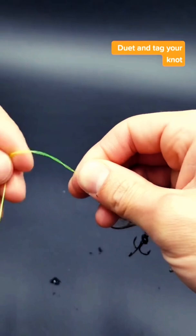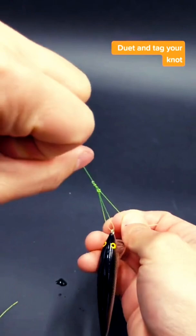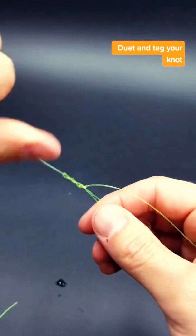And then to finish it off, you go right back through your original loop, pull your tag end, and before you go all the way tight, get it wet to help that knot cinch down securely, and then pull tight.